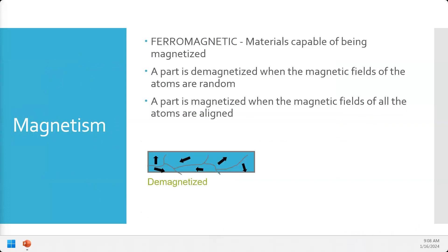Most people are familiar in some form with magnetism. For magnetic particle inspection, we're going to be testing parts that are ferromagnetic. Our parts have to be ferromagnetic and have the ability to be magnetized. Inside the part, in the grain structure and the particles and the crystals that make up the part, those individual grains and crystals inside the material have their own little magnetic fields.